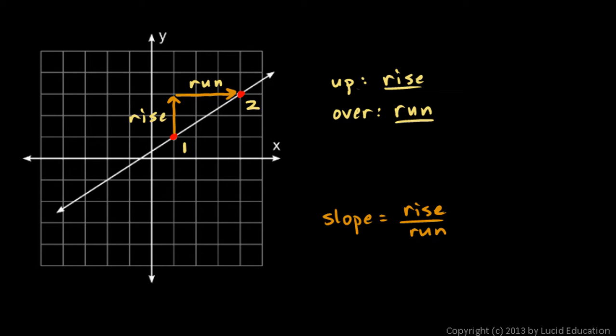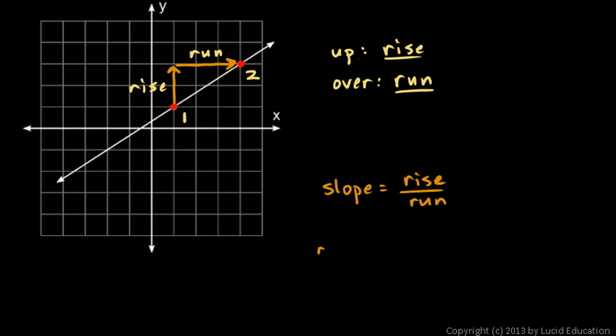So in this example, we can calculate the slope like this. The rise in this case is 2. You can see that right there on the graph.